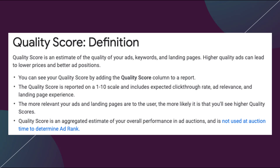Quality Score is an estimate of the quality of your ads, keywords, and landing pages. Higher quality ads can lead to lower prices and better ad position. What Google is trying to do is make sure that we advertisers are creating a good user experience for our end users, who are also Google's end users. Without those people searching, there's no need for search advertising or for Google to provide a search engine. Quality Score is the forward-facing, advertiser-friendly version of how we're ranking according to Google's expectations.